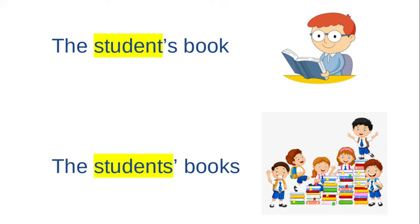The student's book — the book belongs to the student. Student would be singular, meaning one student. So if the book belongs to one student, we would use an apostrophe S: the student's book.